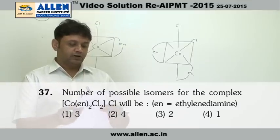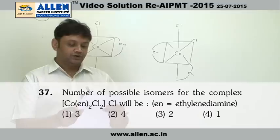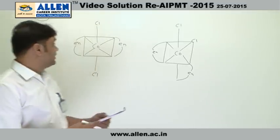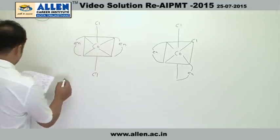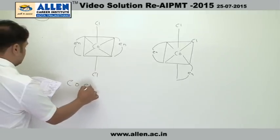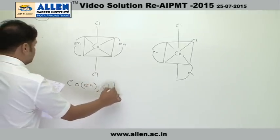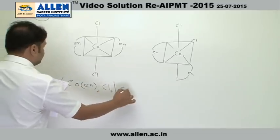We are given the number of possible isomers for the complex [Co(en)₂Cl₂]Cl. The complex given to us is Co(en)₂Cl₂ and Cl.